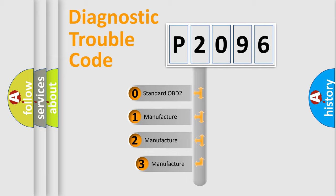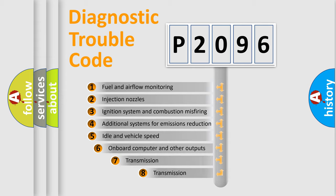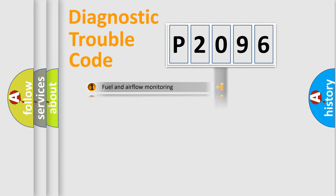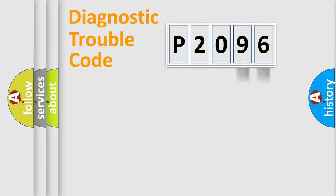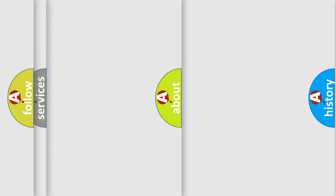If the second character is expressed as zero, it is a standardized error. In the case of numbers 1, 2, or 3, it is a more specific expression of a car-specific error. The third character specifies a subset of errors. This division is valid only for the standardized DTC code, and only the last two characters define the specific fault of the group. Such a division is valid only if the second character code is expressed by the number zero.